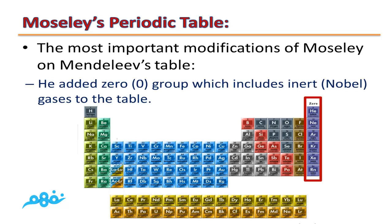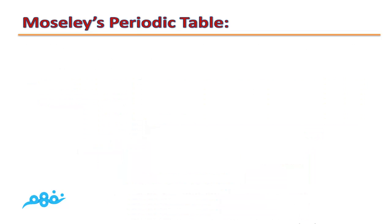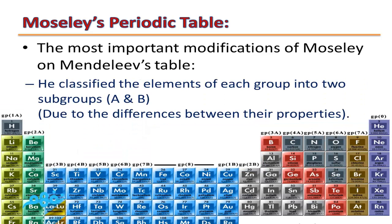Moseley added Group 0, which includes all inert or noble gases, at the end of his table. He also classified the elements of each group into two subgroups A and B. This is an important question: he did this because of the difference between their properties, as each group in Mendeleev's table contained elements different in their properties, so Moseley divided each group into subgroups A and B.